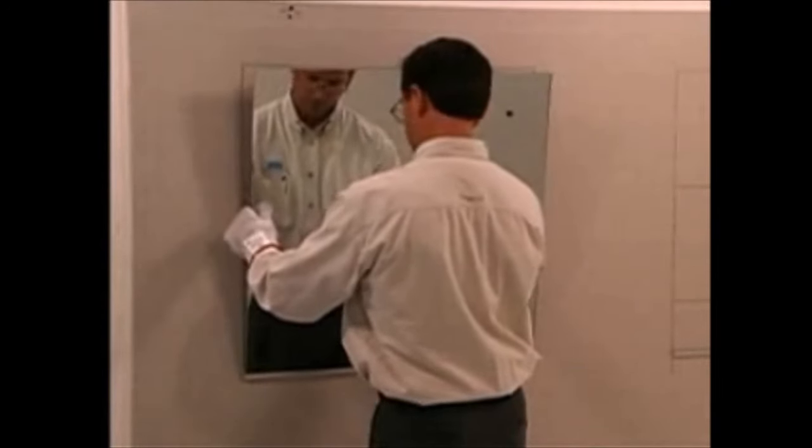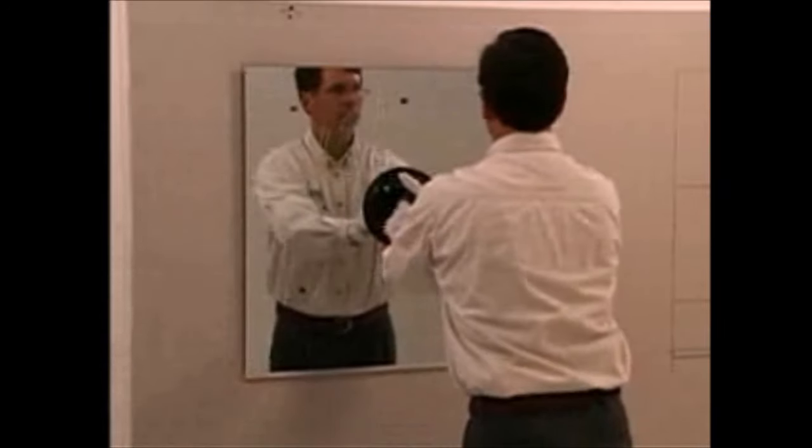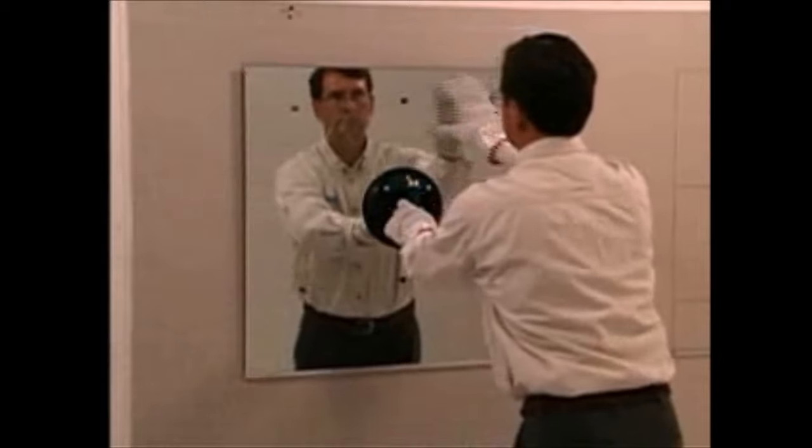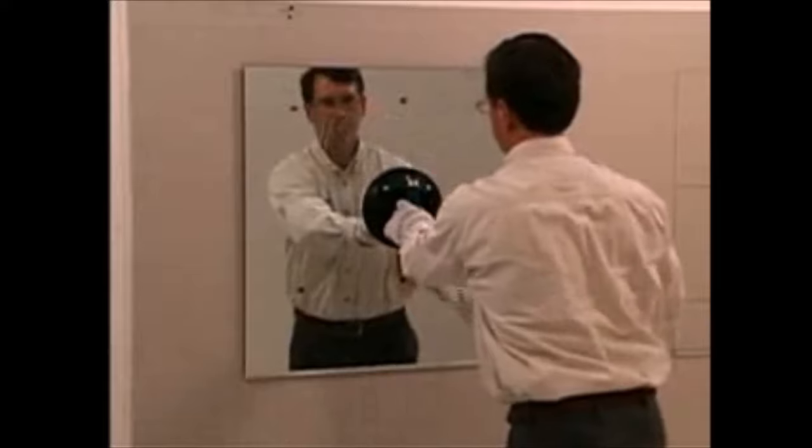At room temperature, quick set will cure to approximately 80% strength in 48 hours, depending also on humidity, type of substrate, and amount of air that can reach the mastic. With minimum coverage, one cartridge will install approximately 20 square feet of mirror.